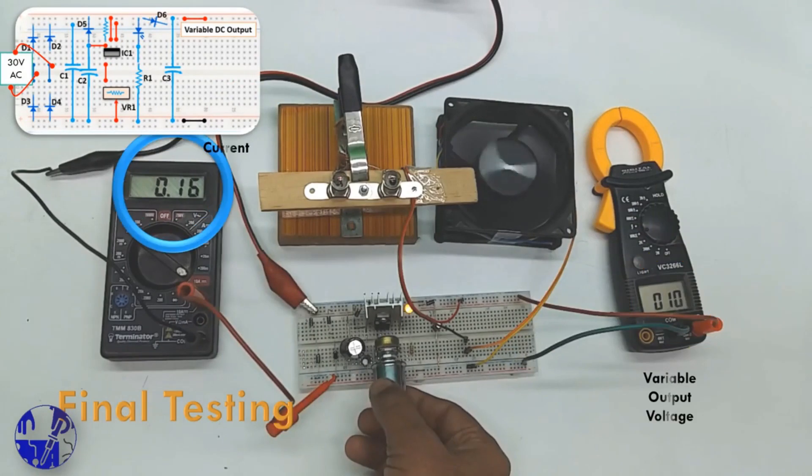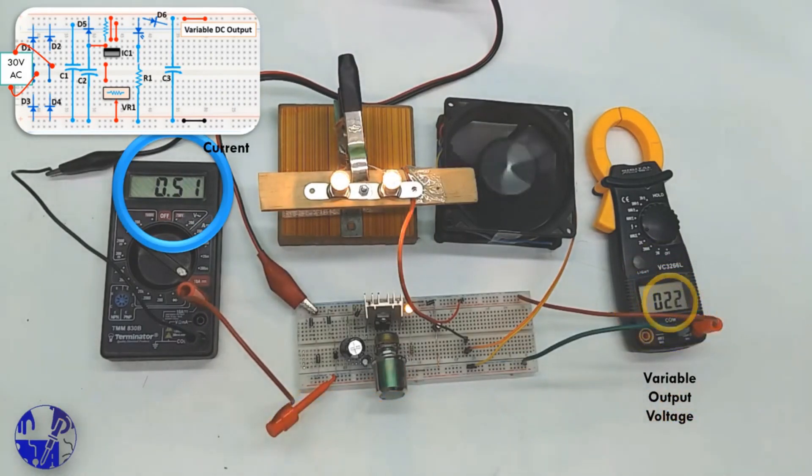Now it is time to test the variable power supply. Connect a suitable load such as a bulb or a DC motor for testing the power supply.